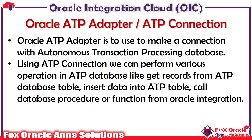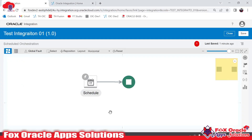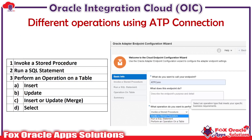Majorly when we talk about integration, when I create a connection and use that connection in an integration, when we select an ATP connection we get three kinds of actions to perform. As you can see in this display, we have three kinds of operations: we can invoke a stored procedure, we can run a SQL statement, or we can perform an operation on a table. All three of these operations we can perform with the help of an ATP connection.